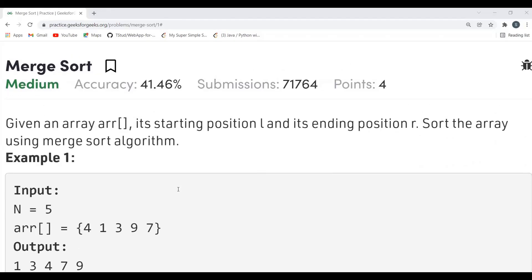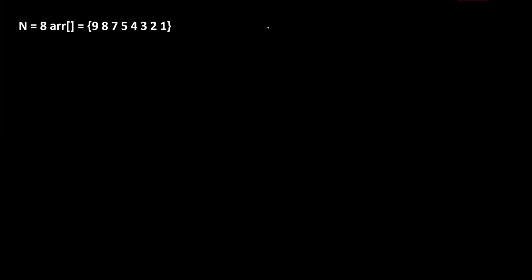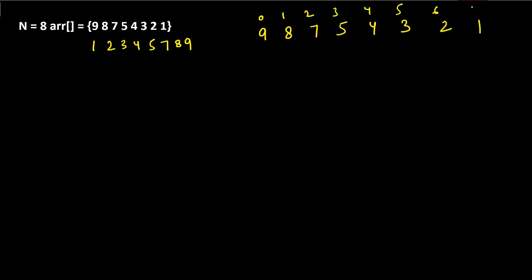Merge sort is based on the divide and conquer approach. Let's understand merge sort first and then move to the coding part. There are two major operations in merge sort: first, we have to divide the array - that's why it is based on divide and conquer. Then we have to merge those partitions. Let's understand the partitioning first, then how we do the merging.